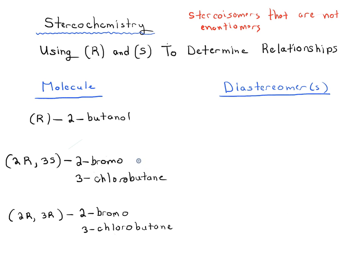What about R-2-butanol — is it possible to have a diastereomer of R-2-butanol? Well, if we switched R for S we would get the enantiomer. So there is actually no diastereomer of R-2-butanol.